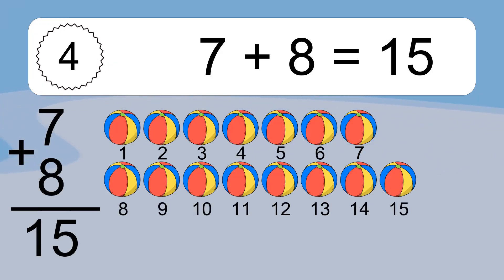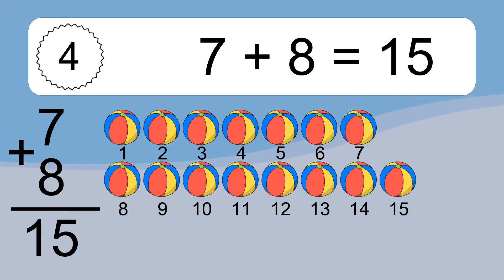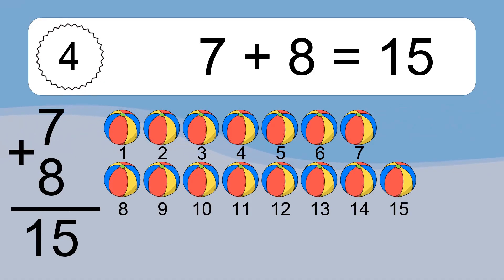7 plus 8 equals what? 1, 2, 3, 4, 5, 6, 7, 8, 9, 10, 11, 12, 13, 14, 15.